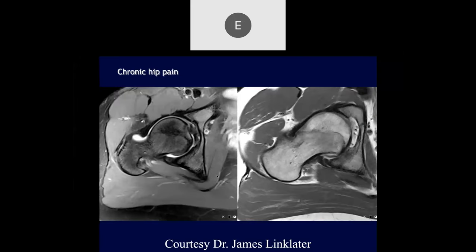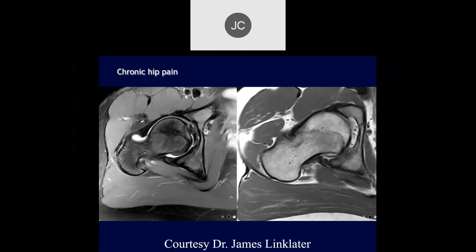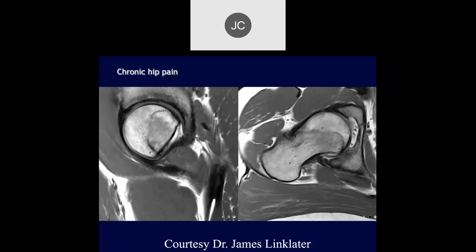Here are some more images. There's an aspherical femoral head, and you can see it nicely here on the T1 oblique axial image. Here's the foveal scar. Notice you have a little divot right here. You can see that the epiphysis is shifted kind of anteriorly and inferiorly. These SCFEs can be subtle, and this was actually a reverse SCFE in this particular patient. You can see the offset along where the foveal scar is.